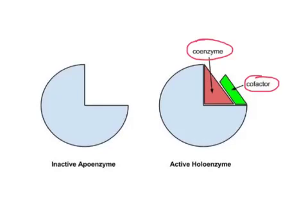Without coenzymes or cofactors, the enzyme is inactive — it can't function. But with its helpers, the enzyme is active and ready to bind some substrate and get a reaction started. Enzyme is a generic term — you have enzymes in every single one of your cells and they carry out a very diverse set of reactions.